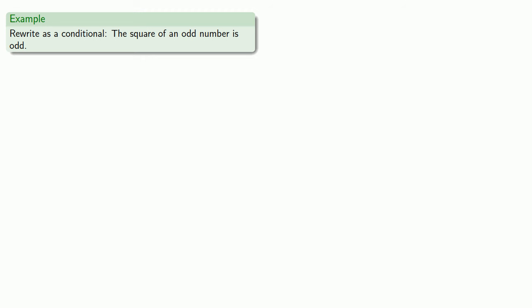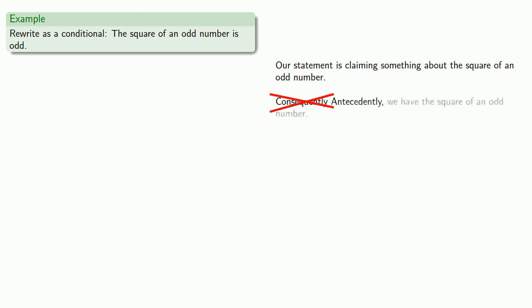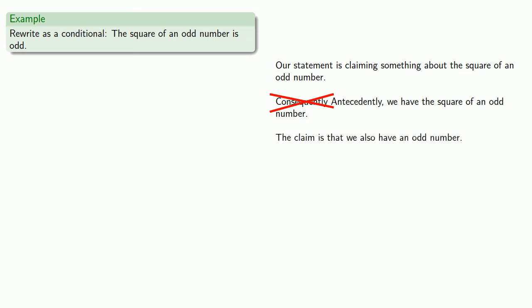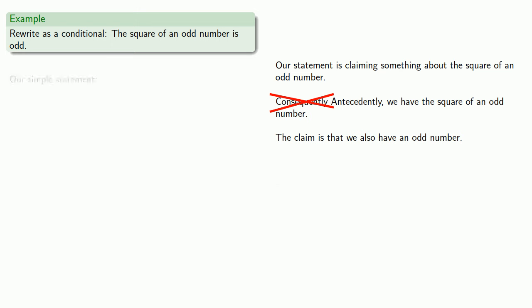Let's rewrite as a conditional: 'the square of an odd number is odd.' Our statement is claiming something about the square of an odd number. It appears that we have the odd number, and so — antecedently — we have the square of an odd number. The claim is that we also have an odd number. This suggests that our simple statements are 'a number is the square of an odd number' and 'a number is odd.'